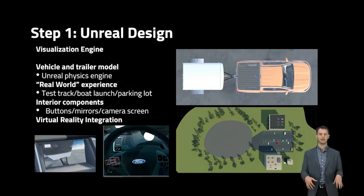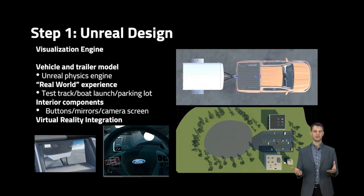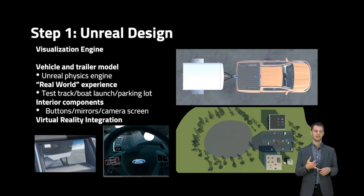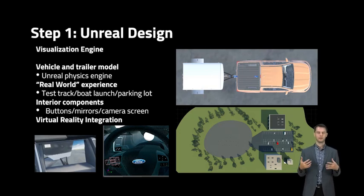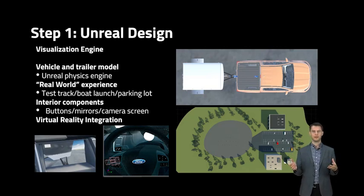The first piece in designing the simulation was developing the world in Unreal. Unreal is a 3D game engine, and I was able to create a simulation of a vehicle and trailer that you could drive around. The vehicle was implemented as an Unreal vehicle class, and I connected the trailer using a physics joint so it actually moved and behaved like a real trailer. I also created a world with different environments — the test track, a boat launch, and different parking lot maneuvers. Then the key piece was integrating the interior components: touch interfaces like the start-stop button and gear shift lever, mirrors, and camera screens. Unreal also enabled me to integrate virtual reality, and using a VR headset and motion controllers, it really helped amplify the experience.